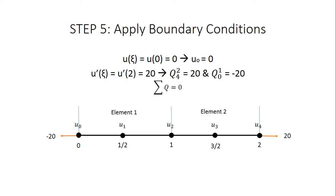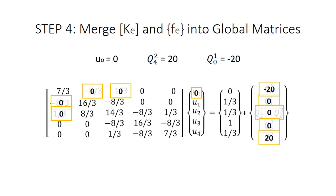The fifth step is to apply our boundary conditions. We are told that u(0) = 0, so the displacement at node 1 is zero and we set the first row and first column to zero while leaving the diagonal entry. We are also told that u'(2) = 20, meaning a force of 20 at x = 2, so Q4 = 20 is plugged into the Q matrix. Since forces must be equal and opposite, Q0 = -20 at the first node, and all remaining Q values are zero.